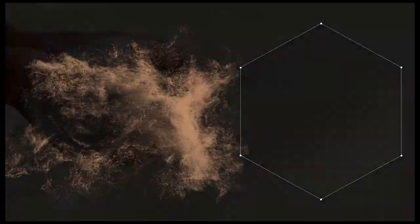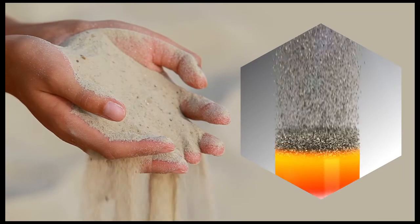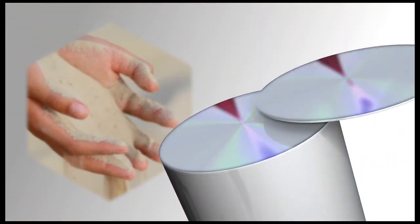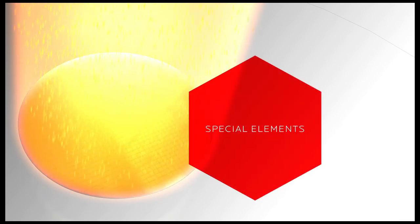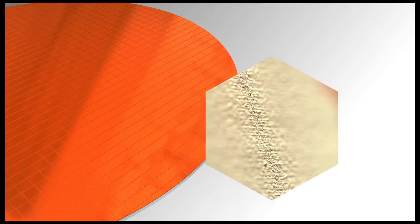Chip-making begins with sand, which is used to create pure silicon. This is then cut into wafers. The wafers are implanted with special elements, making semiconducting materials.